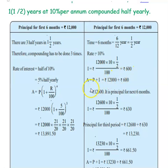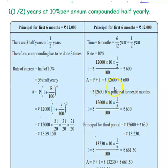This is the interest for the first 6 months. Principal is 12,000, so 12,000 into 10 into 1/2 divided by 100 gives 600. The amount will be principal plus interest: 12,000 plus 600. So 12,600 will become the principal for the next 6 months.